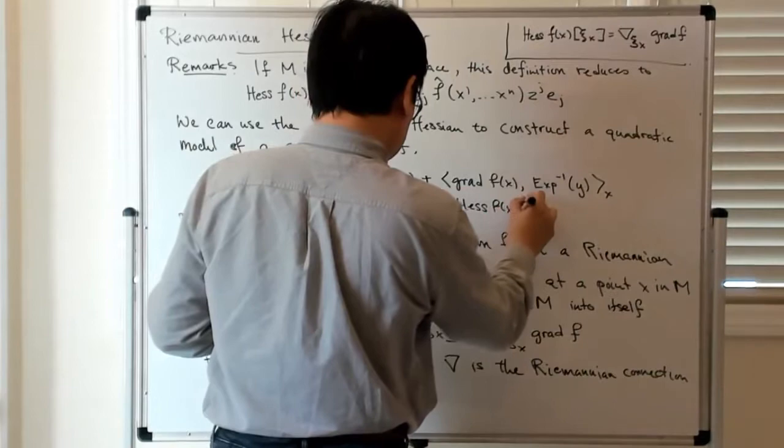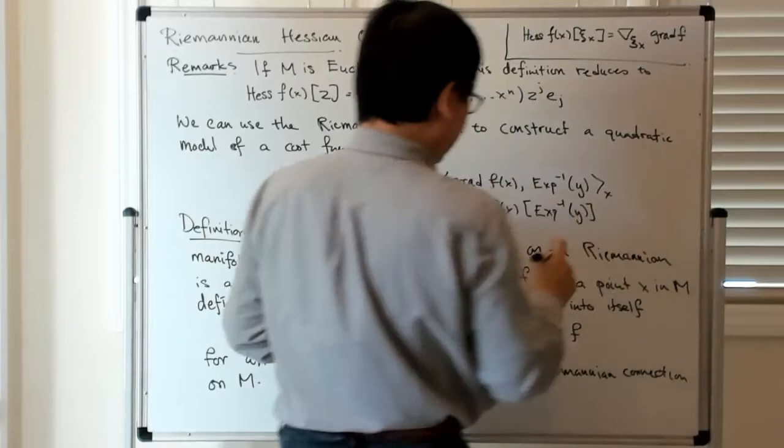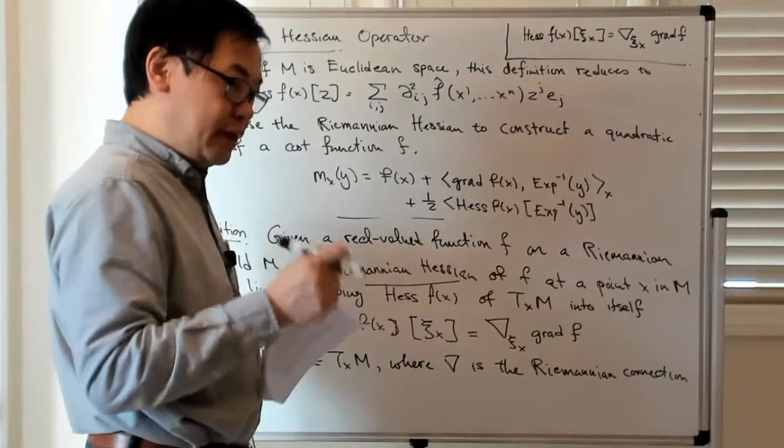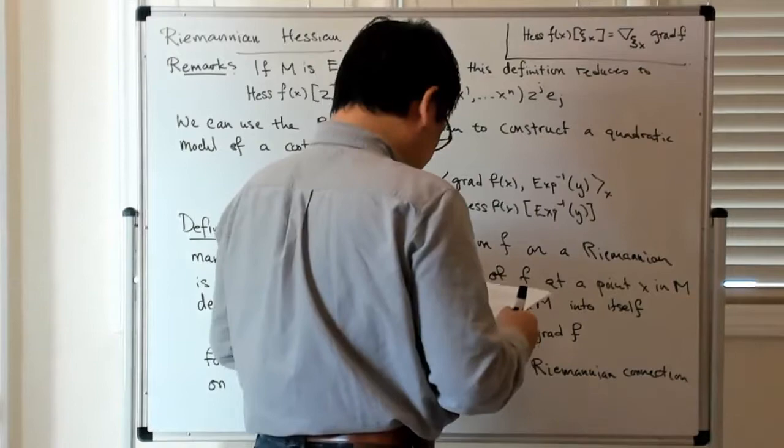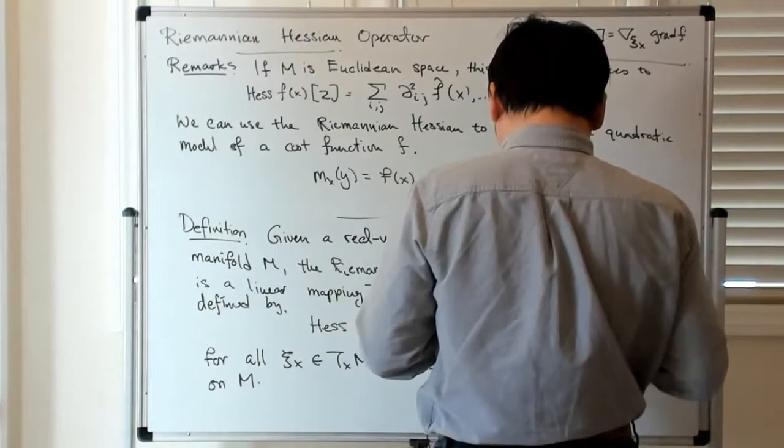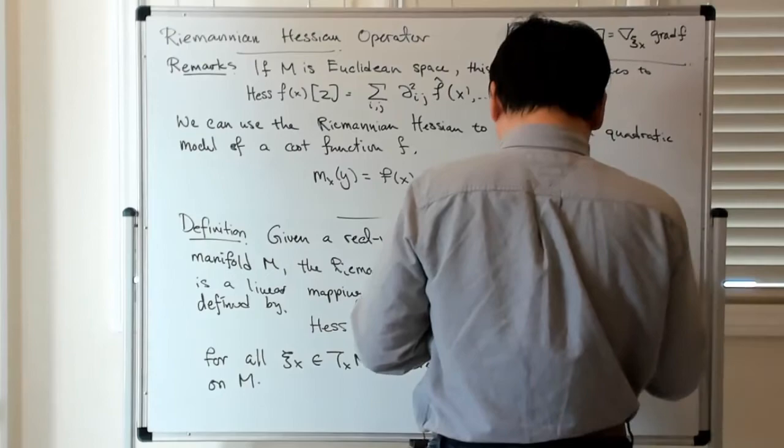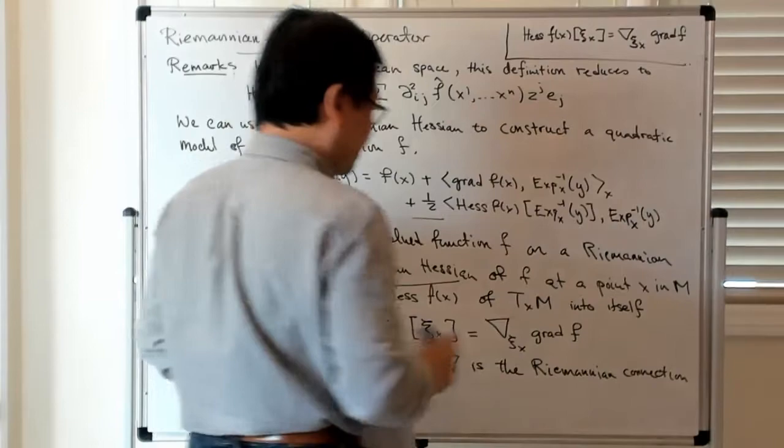Then plus one-half the Hessian of f of x acting on the inverse exponential. So if y is a point on m which is near to x, then the inverse exponential will give you a vector based at x, and so then the Hessian acting on a vector based at x will give you another vector based at x, and then you can pair it as you might expect with the inverse exponential of y again. I should put the base point x here just so that that makes sense.